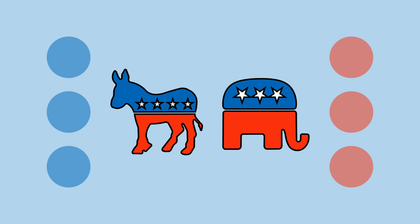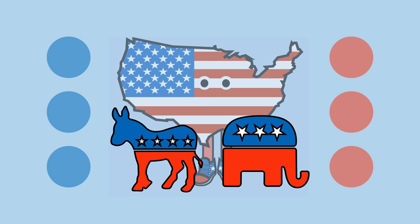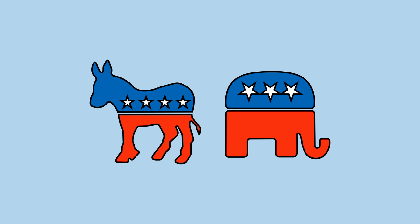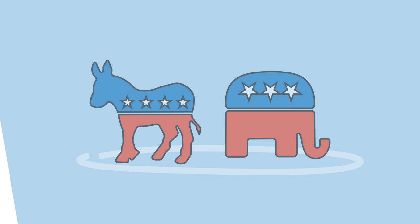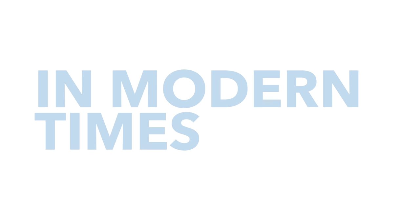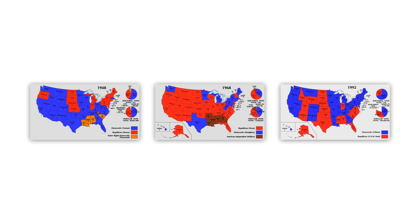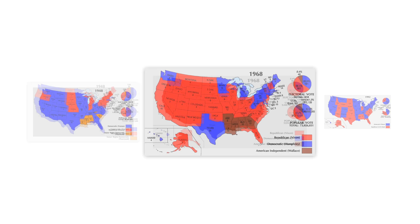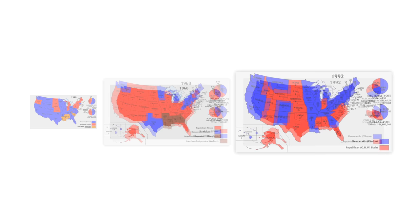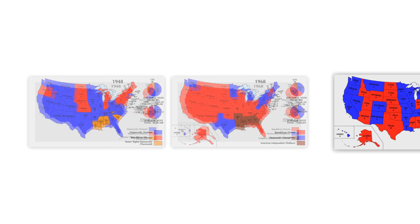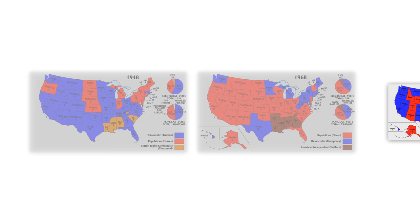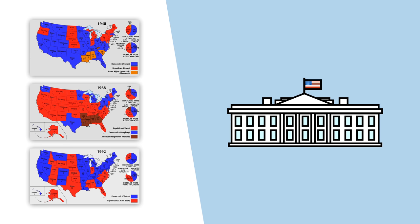Third parties have popped up occasionally throughout history. However, unfortunately, in order to keep third parties from being viable national parties, the two main parties would absorb third party platforms, thus eliminating the need for these third parties. In modern times, there have only been three elections where a third party candidate had enough support to pose a threat to some degree to the two major parties: Strom Thurmond in 1948, George Wallace in 1968, and Ross Perot in 1992. While Thurmond and Wallace were successful at gaining electoral votes in the American South, none of the three attempts came anywhere near the required majority in the Electoral College to win the presidency.